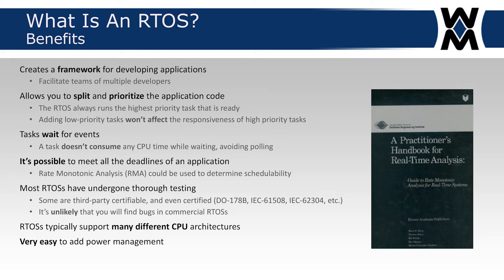It's also possible to meet all the deadlines of an application. There's a book called a Practitioner's Handbook for Real-Time Analysis that covers rate monotonic analysis — it's a 500-page book that starts fairly easy to understand and then gets more complex. Most RTOSs have undergone thorough testing; some are third-party certifiable and even certified — for example, Micro-COS 2 has been certified for DO-178B level A, IEC 61508, and medical 62304. It's very unlikely that you'll find a bug in a commercial RTOS.